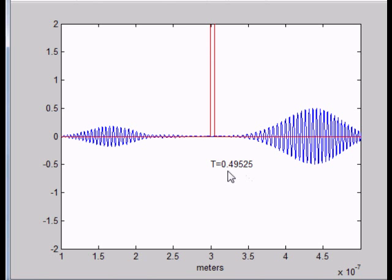The transmission coefficient takes in the real part and the imaginary part and compares it to the original wave. So in this simulation, about 50% of the wave went through.